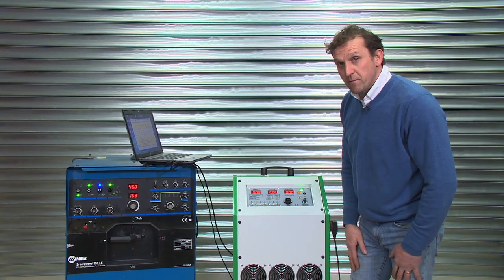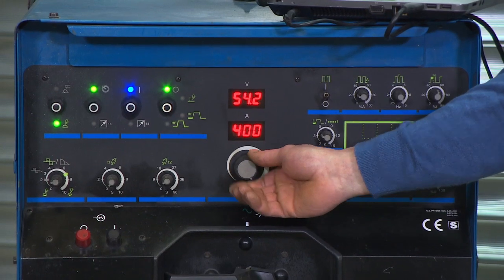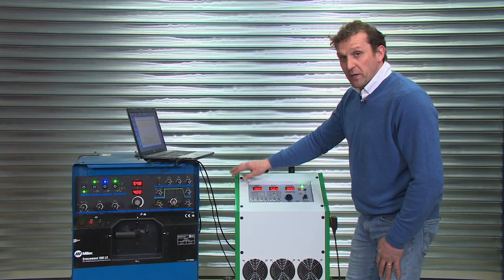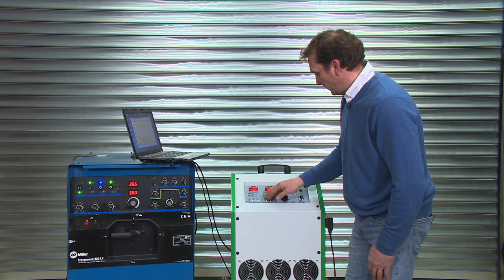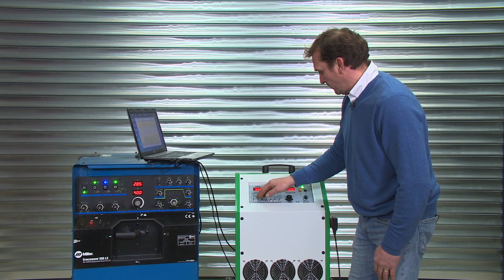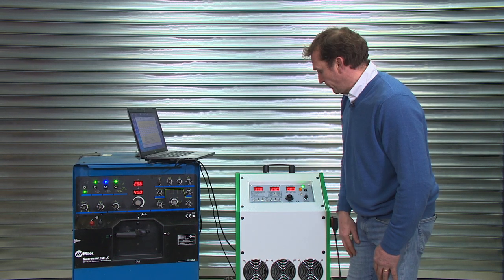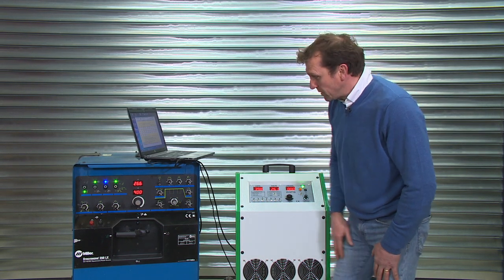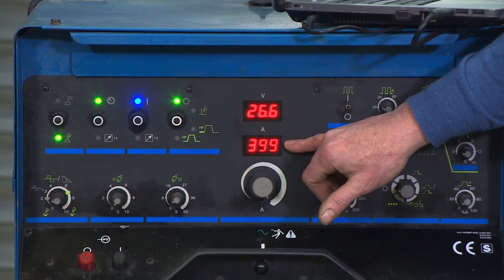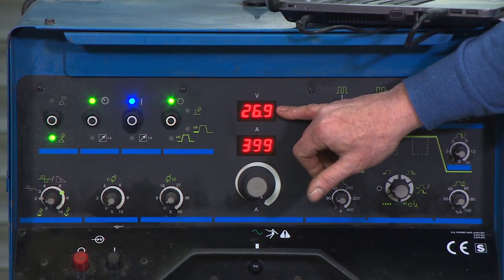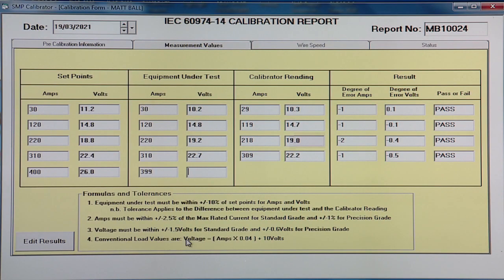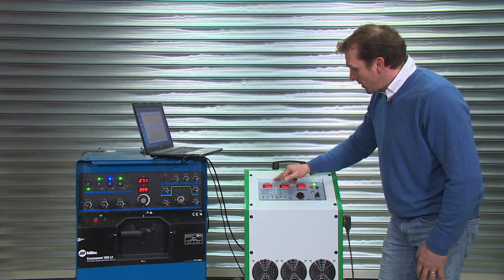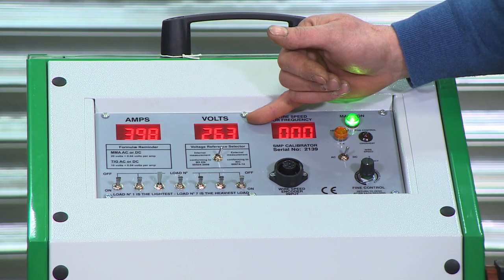Now the final reading, maximum 400 amps. And we're looking for a voltage of 26.0. So let that settle. So we have the welder reading 399, 26.27, enter that. Then we enter the calibrator reading, 398 and 26.3.